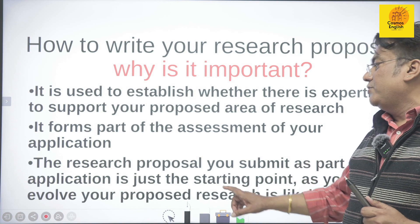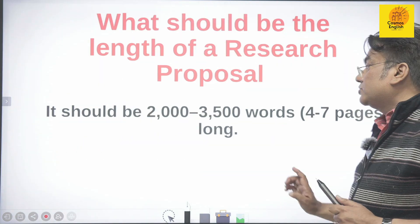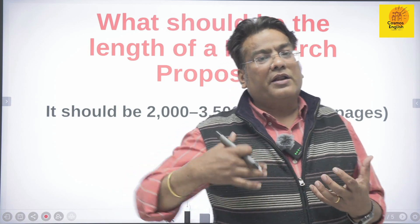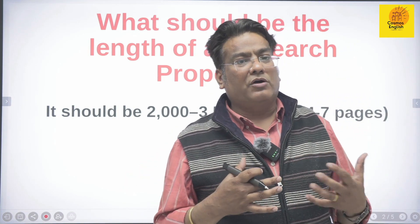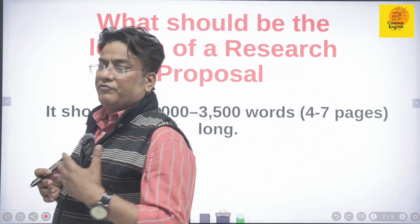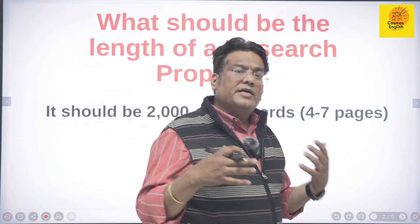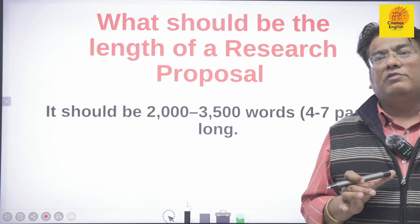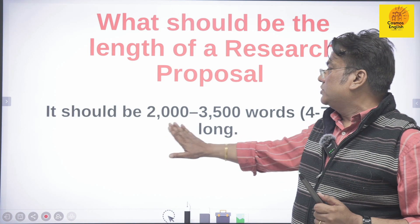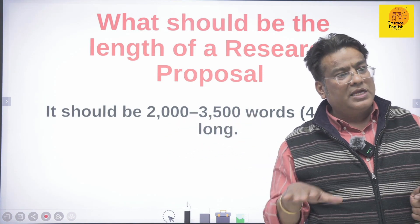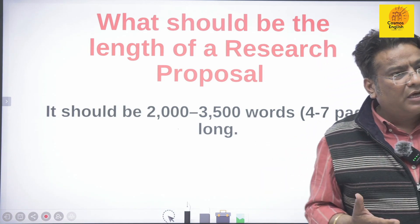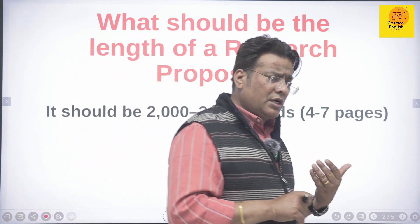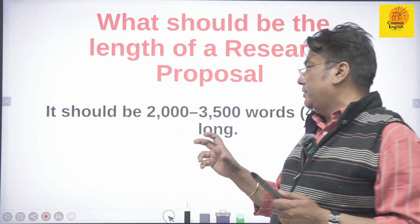As your ideas evolve, your proposed research is likely to change. In the very beginning, when you come up with an idea, you start reading day by day and come across different libraries, books, seminars, and symposiums — and your ideas will evolve. You might shift from one topic to another or add different writers. The word count should be around 2,000 to 3,500 words, though it varies by university. For example, Rajasthan University recently asked for a 1,500-word research proposal.